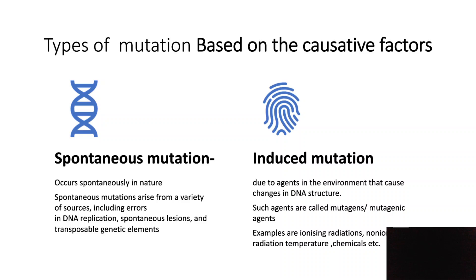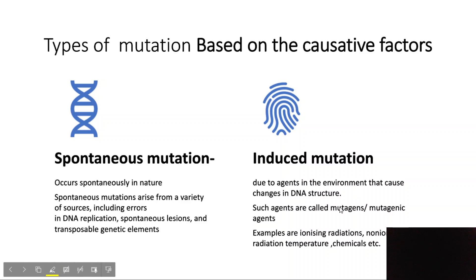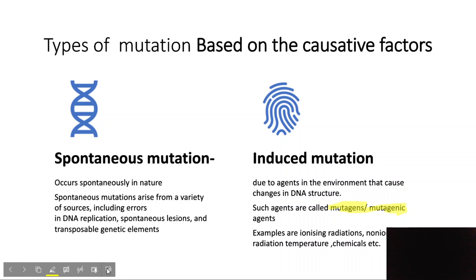Those agents that cause induced mutations — whether they are chemicals, ionizing radiations, or non-ionizing radiations — are known as mutagens, or mutagenic agents. So based on the causative factor, mutations are classified as spontaneous or induced.